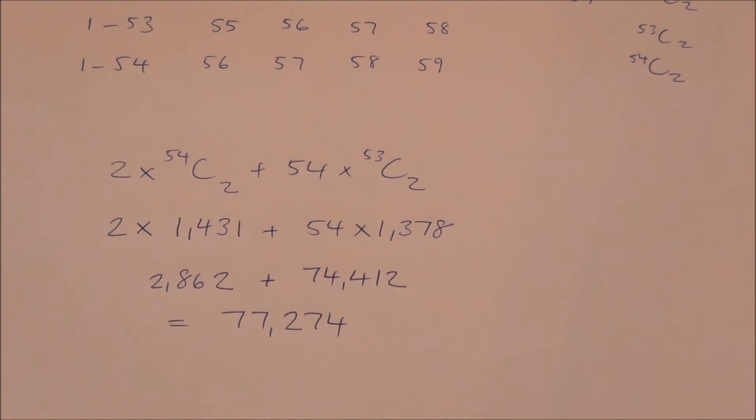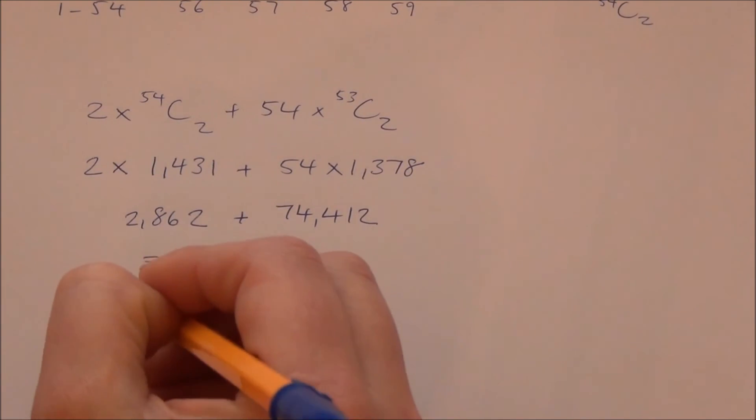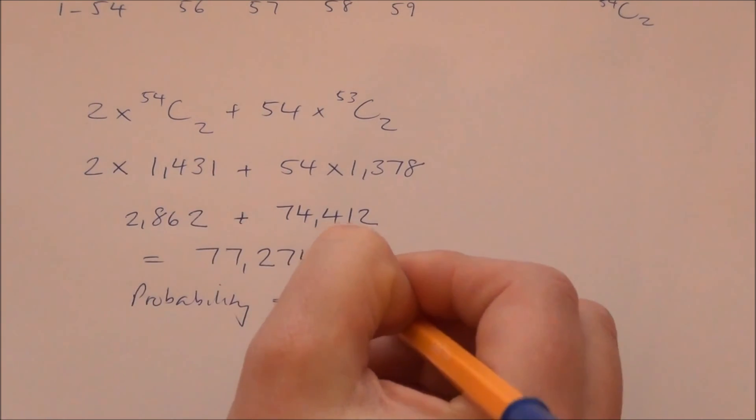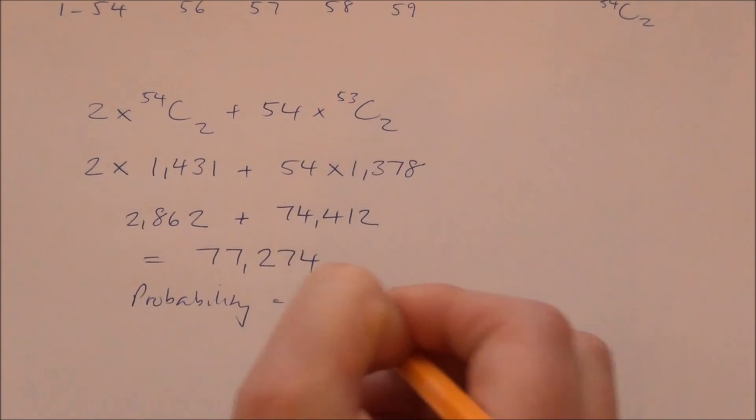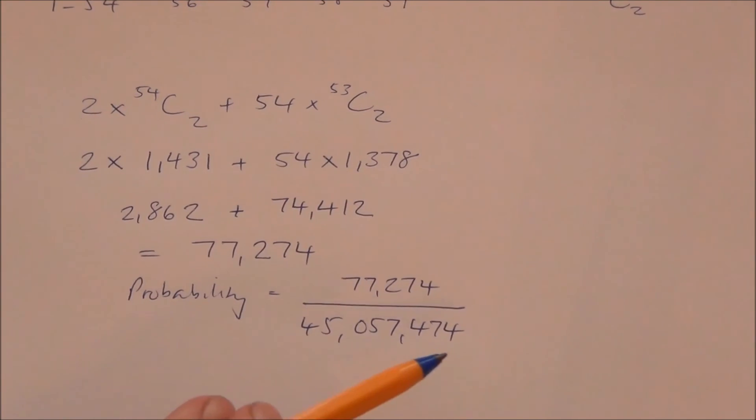So, the total number of combinations where there are four consecutive numbers is 77,274. And, all we need to do to find a probability equals 77,274 divided by 45,057,474, which is the total possible number of combinations in the overall lottery.